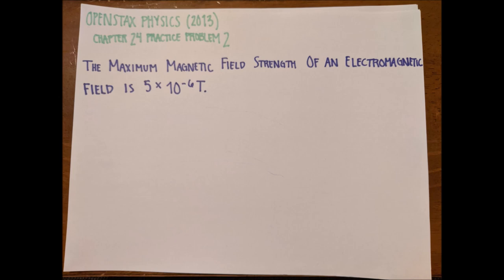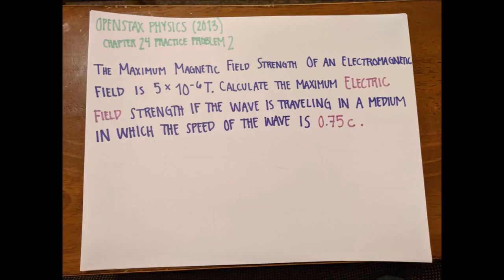So now that we have a pretty solid conceptual understanding of electromagnetic waves, let's take a look at a mathematics application problem. So this is from the OpenStax Physics textbook 2013, it's cited at the end. And it says that the maximum magnetic field strength of an electromagnetic field is 5 times 10 to the negative 6 teslas. Calculate the maximum electric field strength if the wave is traveling in a medium in which the speed of the wave is 0.75c. Don't get thrown off by that 0.75c - all that it's saying is that since we're not going through a vacuum, we're going to be some percentage slower than the normal speed of light, which in this case is 0.75.